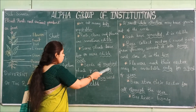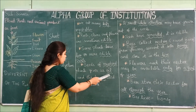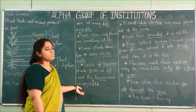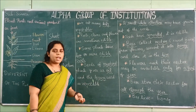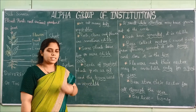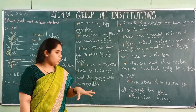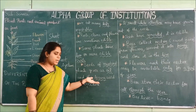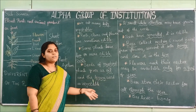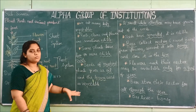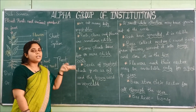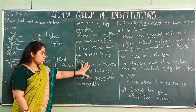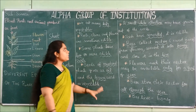Seeds of mustard plants give us oil, and the leaves are used as vegetables. So from one single mustard plant, two types of edible parts are available — the seeds for oil and the leaves as a vegetable. That is an example of a plant with more than one edible part.